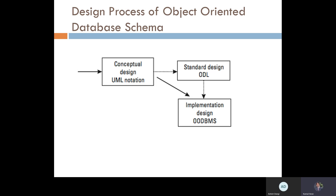This is the design process for an object-oriented database schema. We use conceptual design with UML notation — UML is the acronym for Unified Modeling Language. We use the standard design, which is the Object Definition Language. And the implementation design is basically our object-oriented database management system. This is how the arrows connect within each other, and this is called the object-oriented database schema — our design for the object-oriented database.